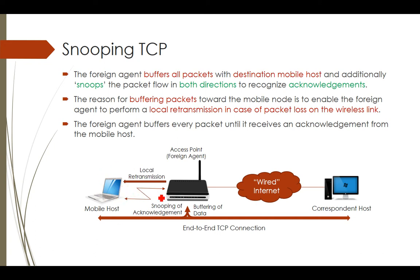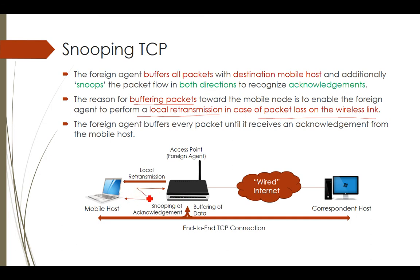Wireless connections are erroneous, so there are many chances that data gets lost during communication. The reason for buffering packets towards the mobile node is to enable the foreign agent to perform local retransmission in case of packet loss on the wireless link. If the packet gets lost, the foreign agent retransmits the data — that is called local retransmission. He retransmits the entire data to the mobile host from the buffer.